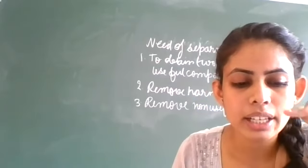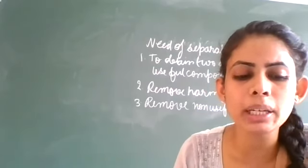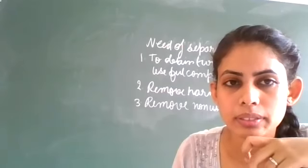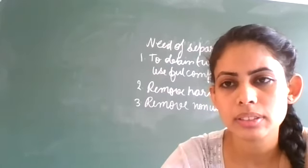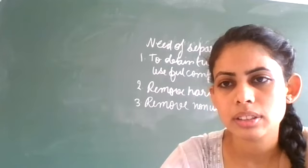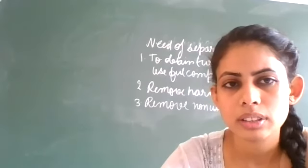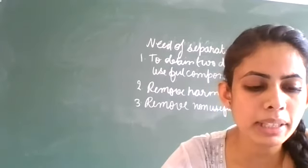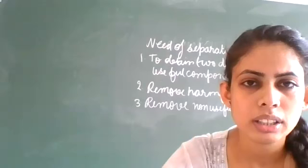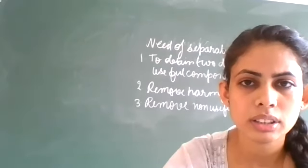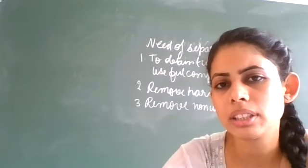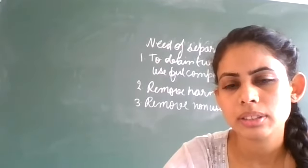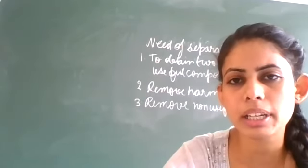The second process in the table is: churning milk to obtain butter. Haspreet Singh, can you tell me the answer for the second one?